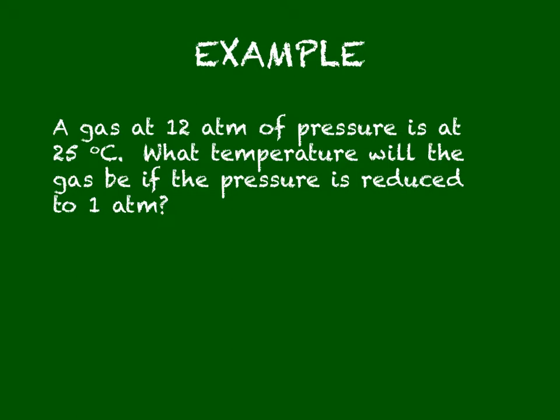Just like all of our other problems, we want to give each quantity that we know a name, and the quantity that we're looking for, we want to make sure that we give that a name as well. We have a gas at 12 atmospheres of pressure. So 12 atmospheres, that's a pressure. I'm going to say that is my pressure 1, because it's asking what will the temperature be if the pressure is reduced.